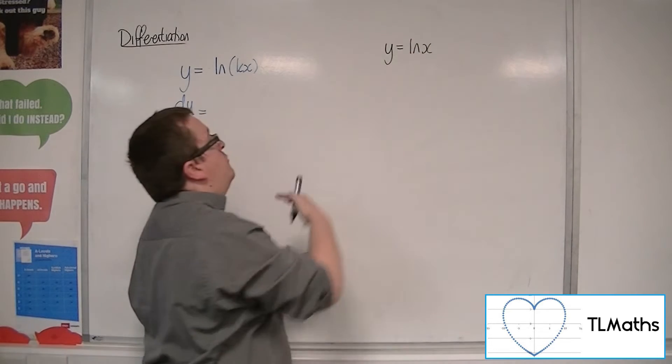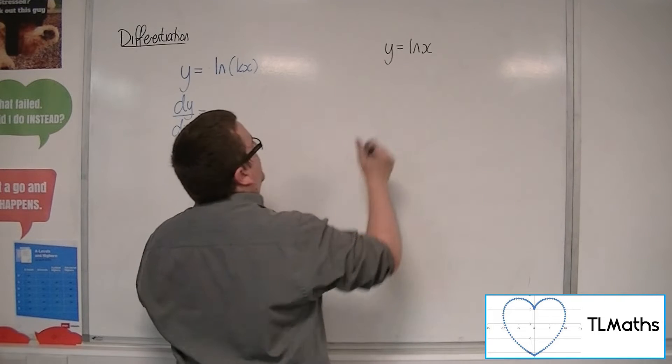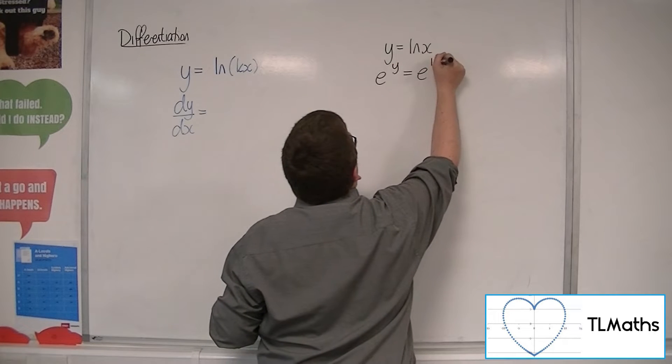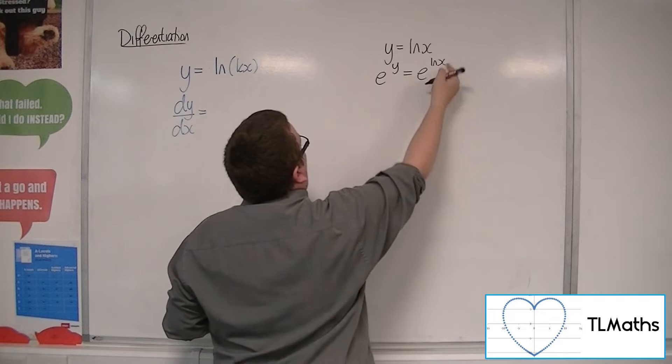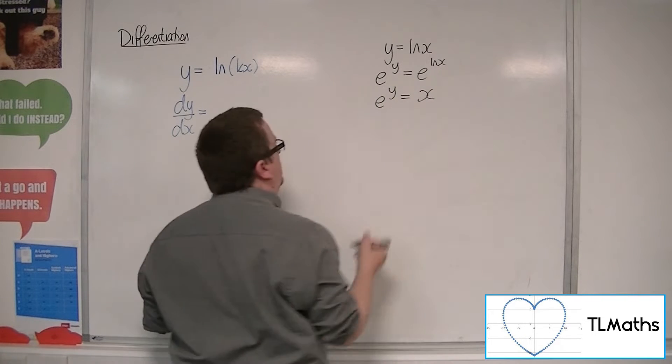In order to differentiate ln of x, what I first of all use is e to both sides, effectively. So I get e to the y is equal to e to the ln x. Now e to the ln x is just going to be x.